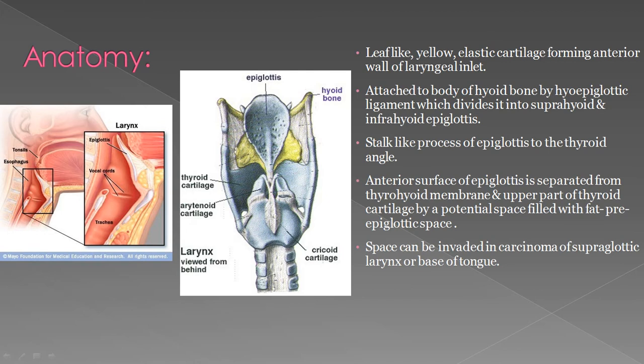This is the front of the throat and this is the back. The epiglottis is attached to the body of the hyoid bone by the hyoepiglottic ligament, which divides it into the suprahyoid and infrahyoid epiglottis. The stalk-like process connects the epiglottis to the hyoid angle.